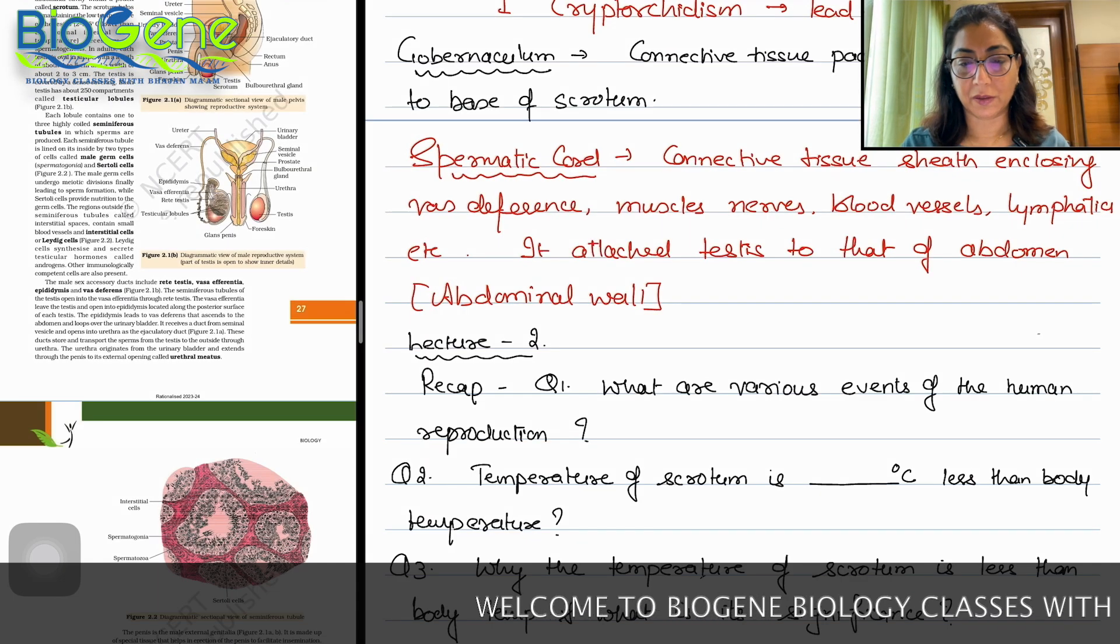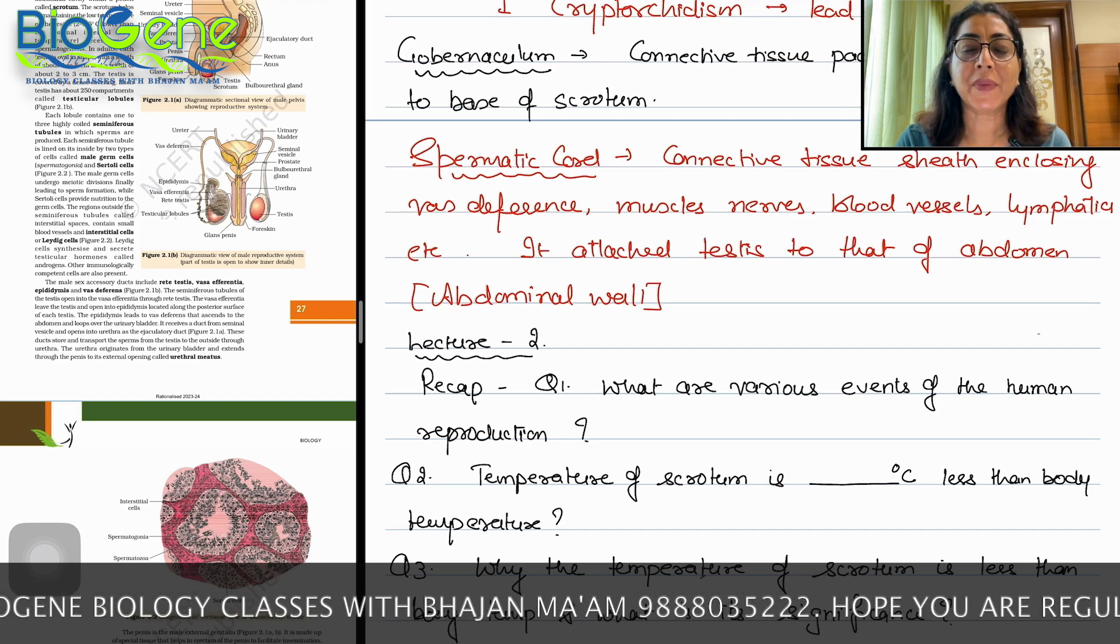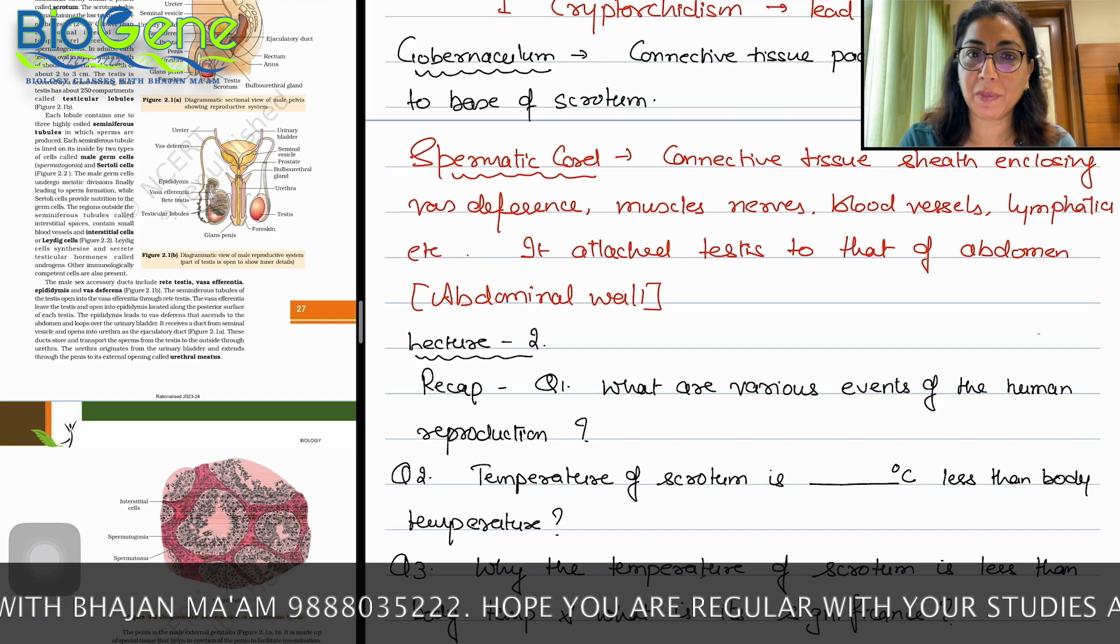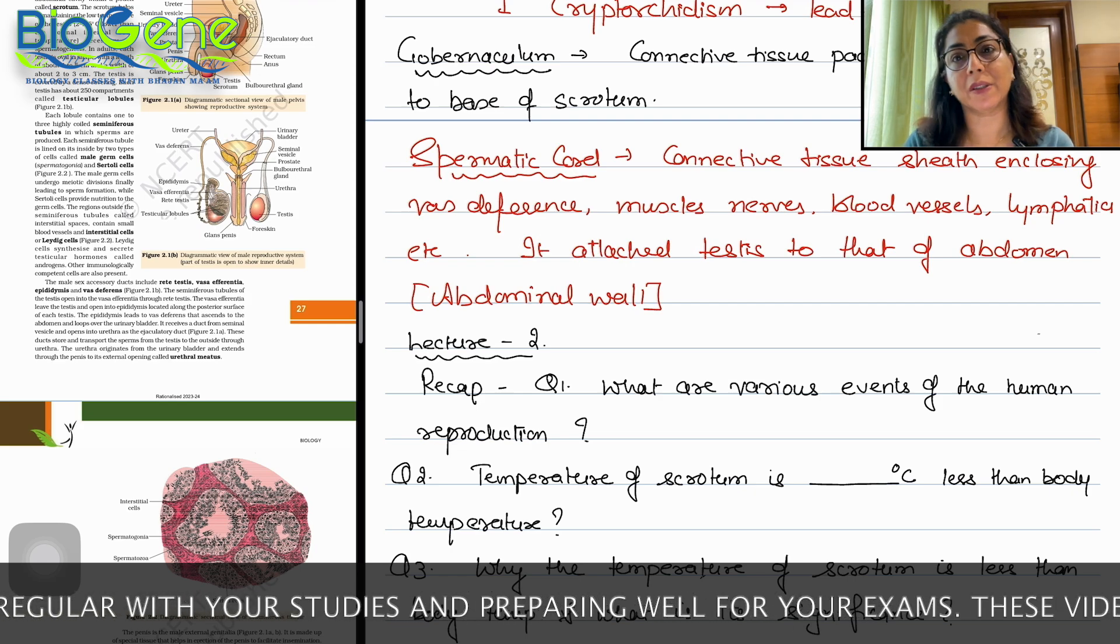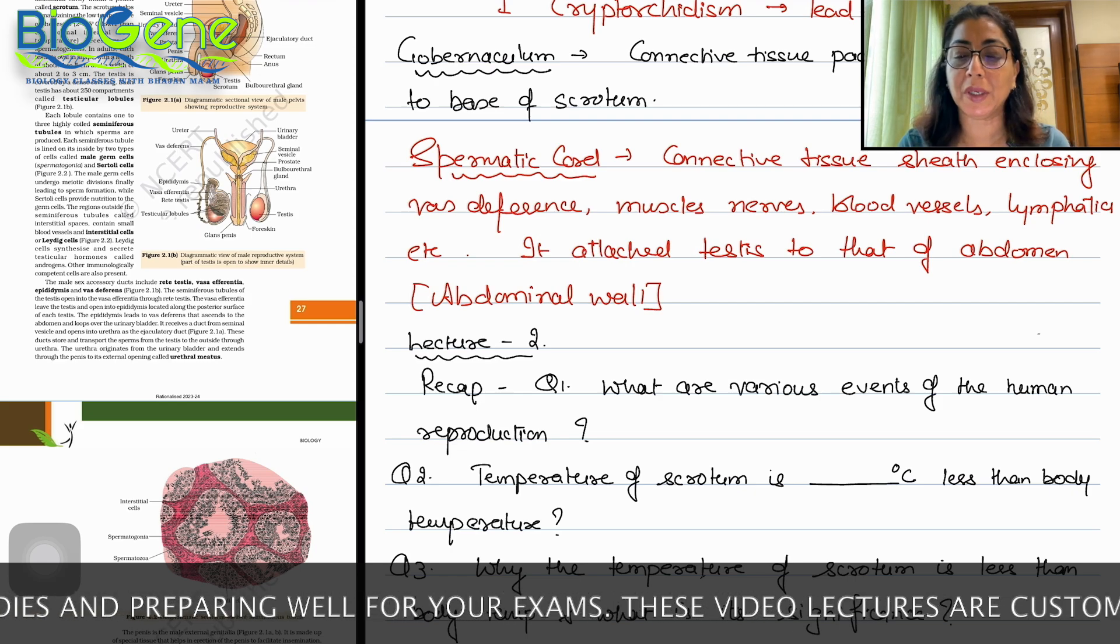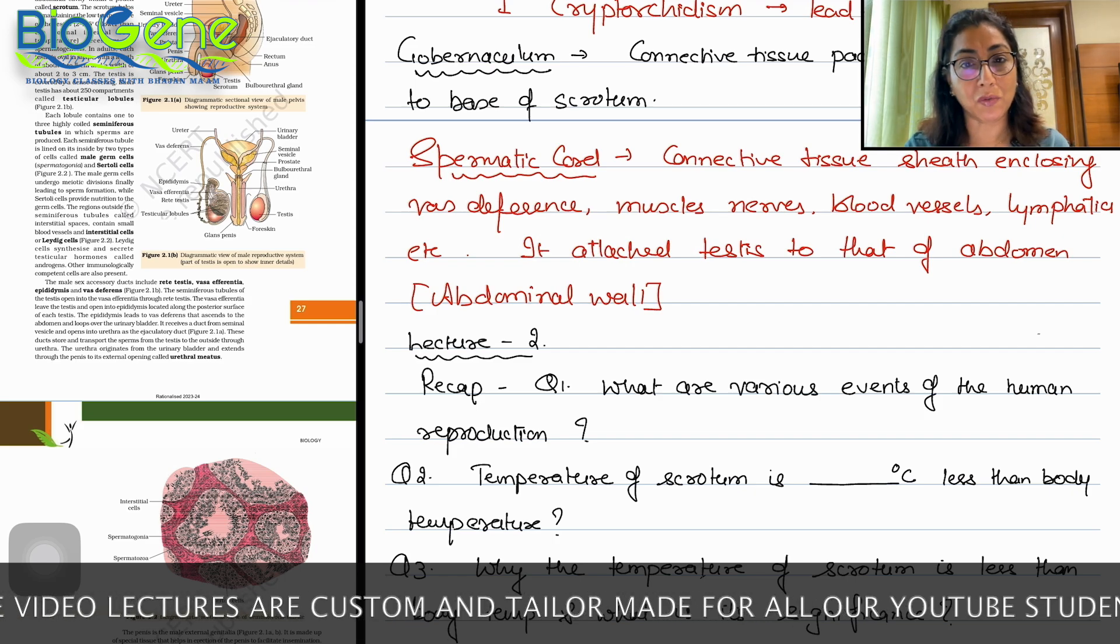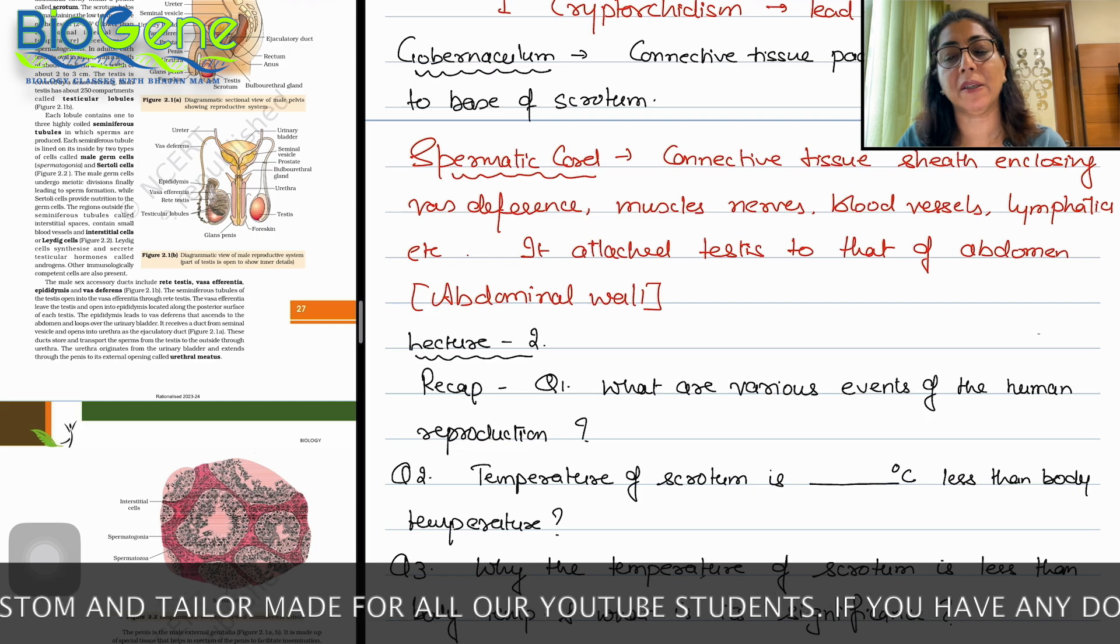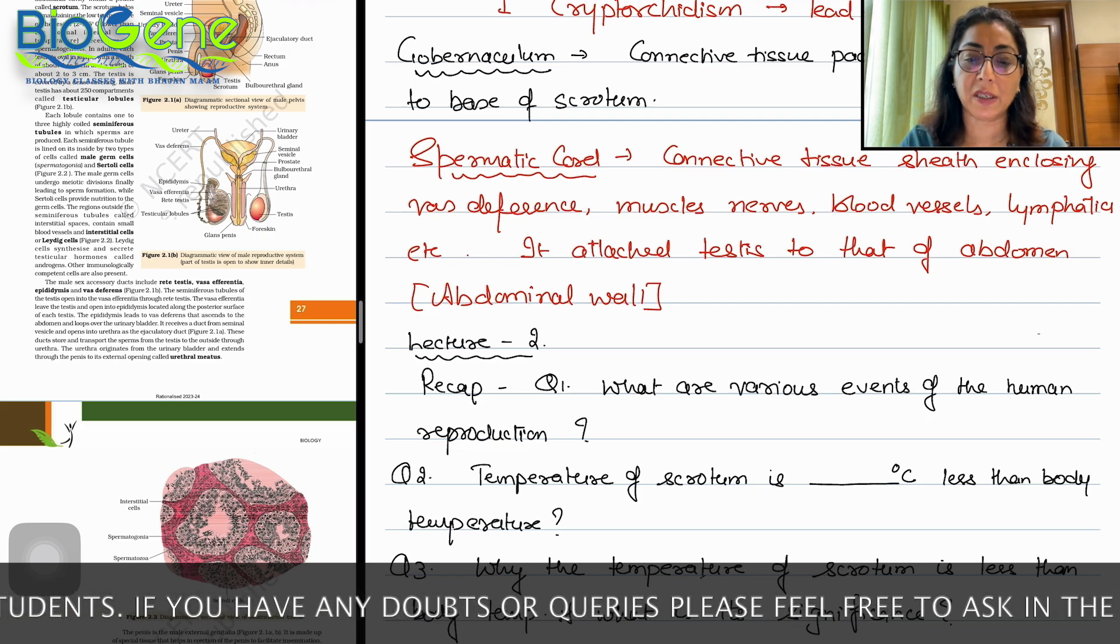Welcome back to Biogene Biology Classes. We are talking about Human Reproduction. In the first lecture of Human Reproduction, I had already discussed primary sex organs, secondary sex organs, and male reproductive system. Last time I finished with the connective tissue pad attaching the testes to the base of scrotum, that is called gubernaculum.